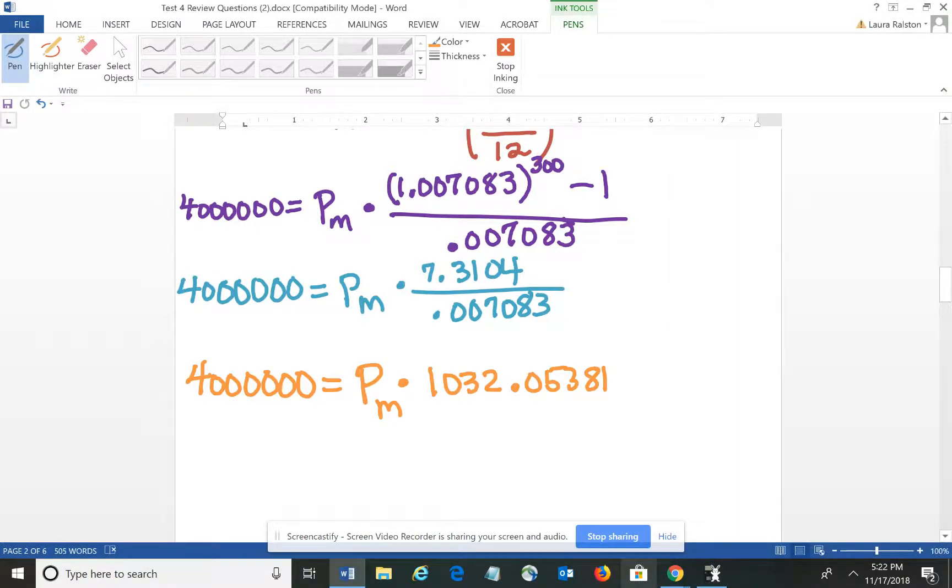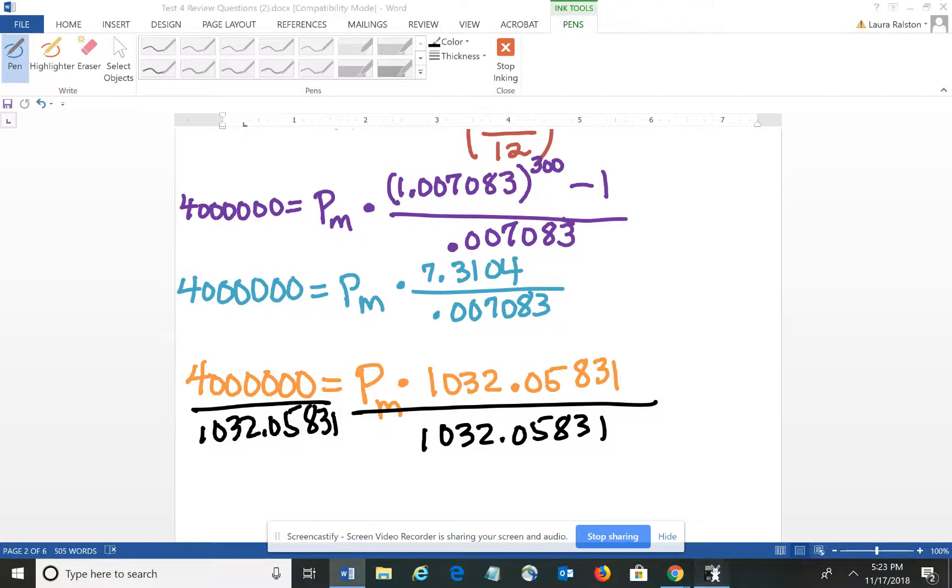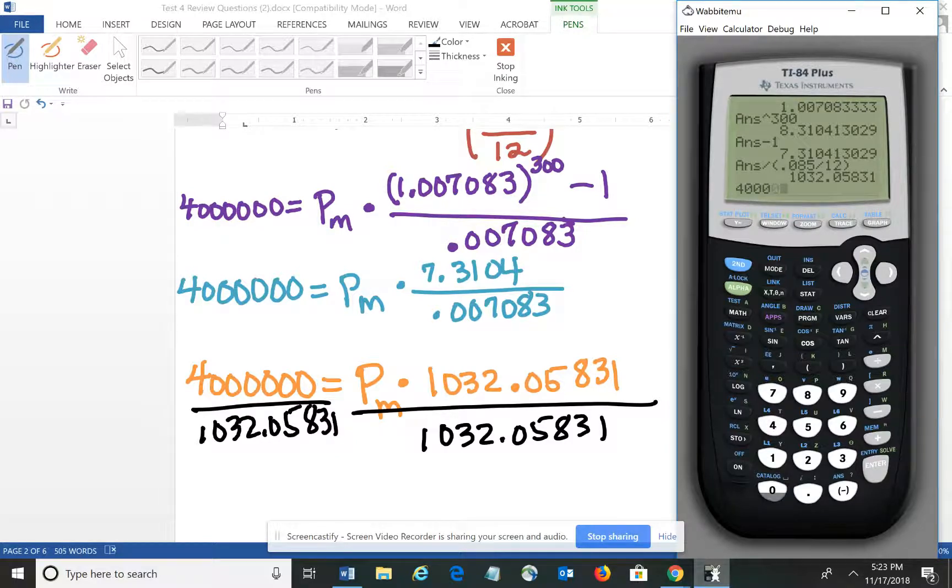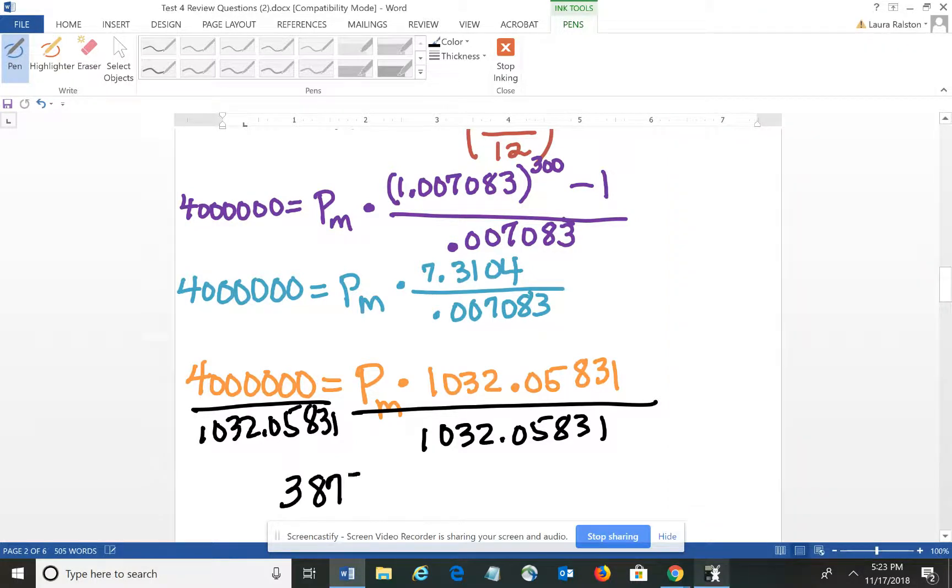And then we need to solve – oh, I got my 8 and my 3 backwards. Hold on, I got my 8 and my 3 backwards. So this should be 8, 3, 1 and we're going to divide both sides by that value. So I'm going to divide by 1,032.05831 on both sides. So we're going to do 4,000,000 divided by that value and we end up with $3,875.75. And that's how much Carl should deposit each month into his 401k in order to have $4 million in 25 years.